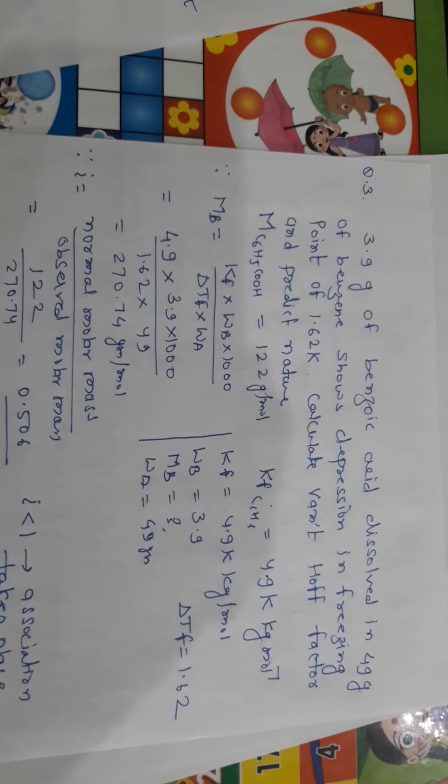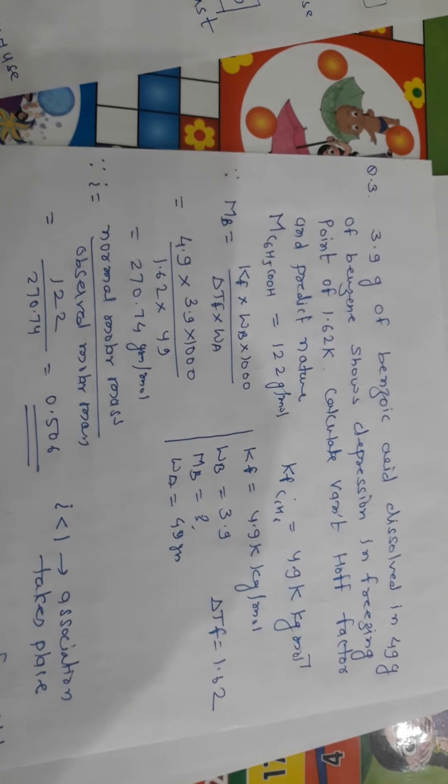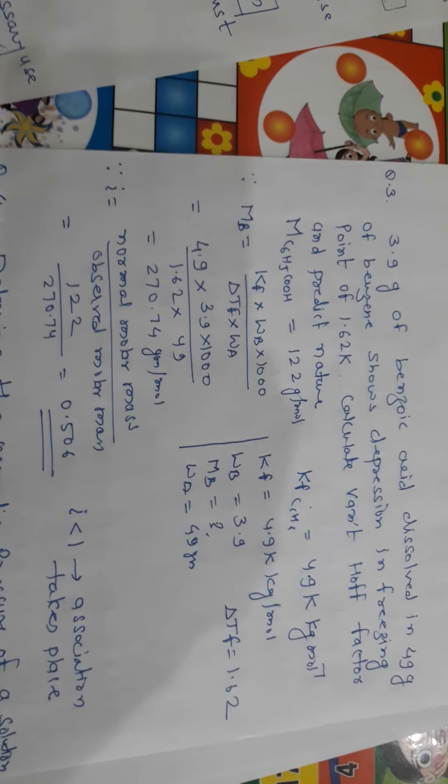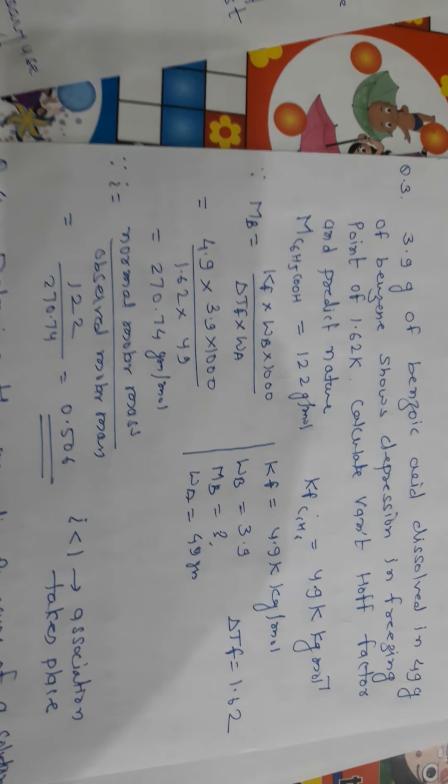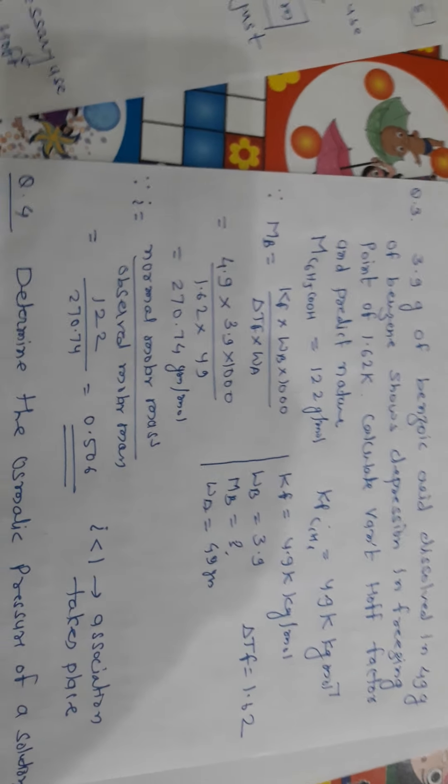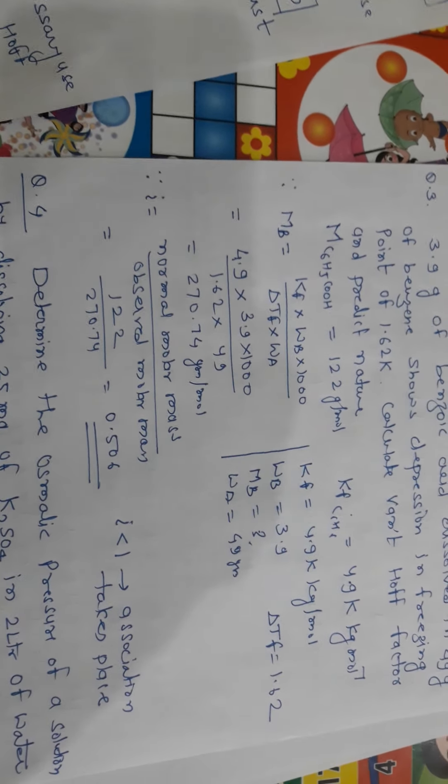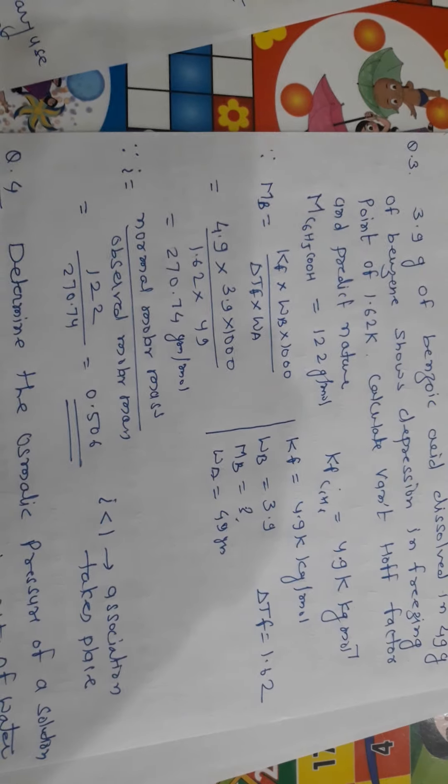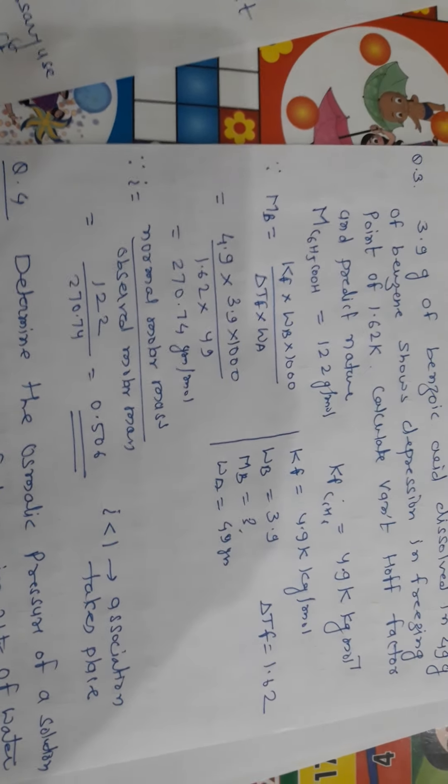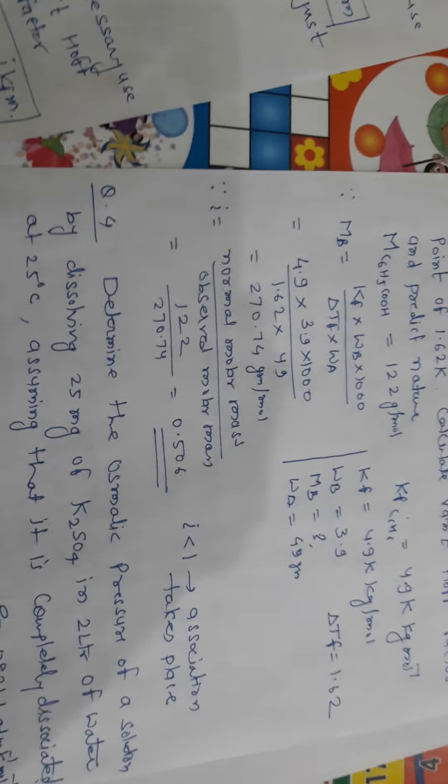So ΔTf is equal to Kf times M. Here we are not using I. We can use I over here, but it will become lengthy. So we will use the I later on. First, we will find out the observed molar mass using a colligative property. Normal we are knowing. Now we are calculating observed.